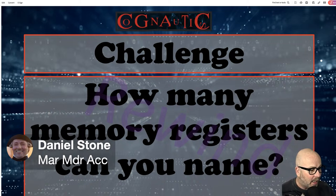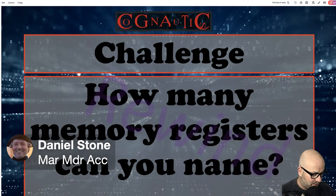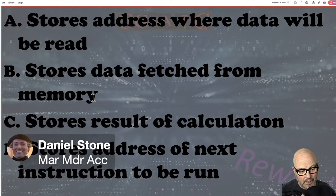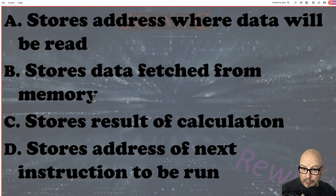Dan, how are you? Thank you for being here. You've got MAR, MDR, ACC — what a good man you are. Thanks an awful lot. You've got most of it there. So we've got MAR, MDR, ACC — what's the one you forgot? The PC, the program counter. That's the other one. Good. We've got three in now.